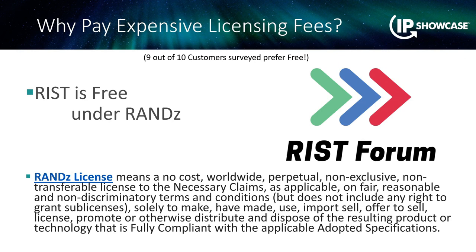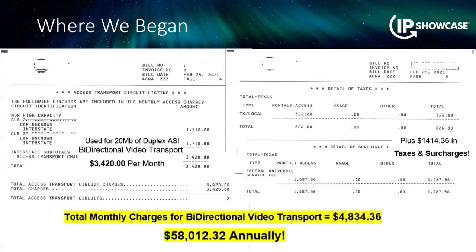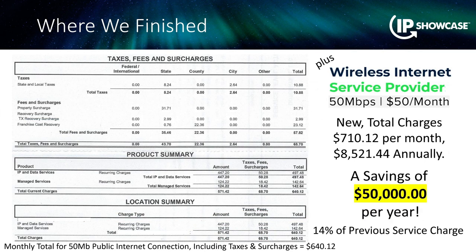The result is that we deliver an intact transport stream to the destination for a cost at least 50% lower than the initial cost of a dedicated line. And another reason RIST contributes to savings? RIST is free, provided under a RAND-Z agreement, resulting in no licensing costs. I said at the beginning I would show the differences between the initial customer invoice and the resulting service invoices. We started with $4,800 a month — $58,000 annually — and we concluded with $620 a month plus $50 a month for the WISP. We replaced the $4,800 a month service for a cost less than half of the taxes and surcharges from the previous bill. Now the monthly expense is $710 a month, which is 14% of the legacy service, and we save this customer $50,000 a year. With what I've just explained to you, you can now apply these same resources to your customers and companies as well.